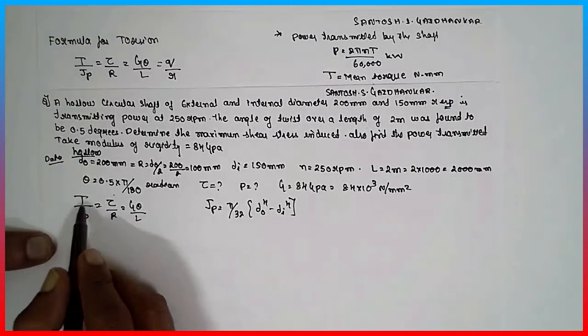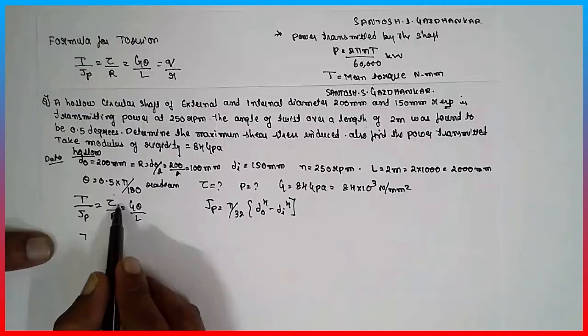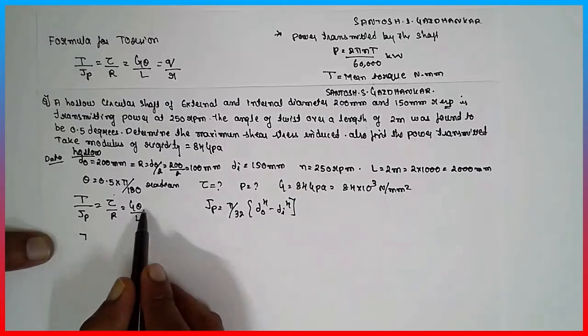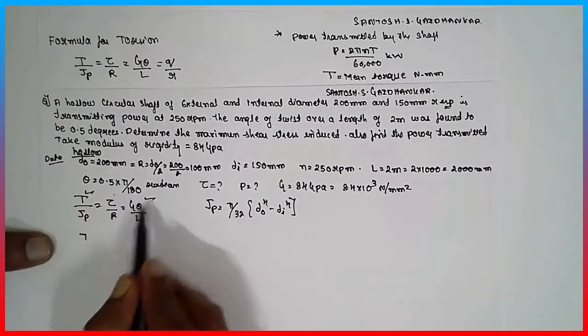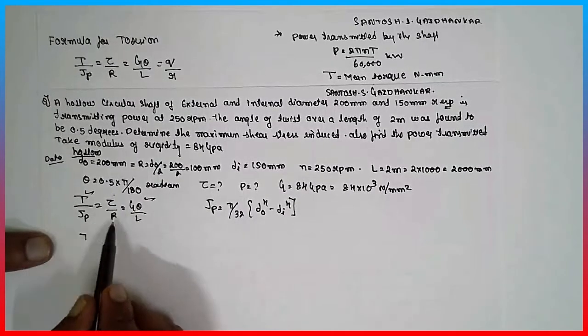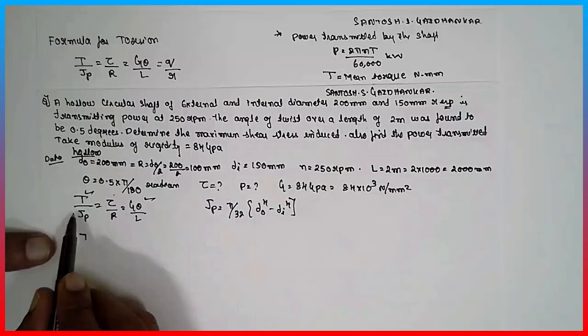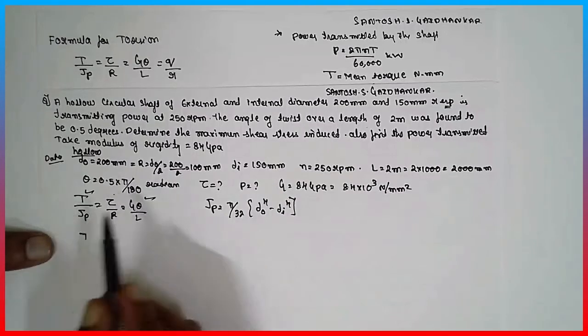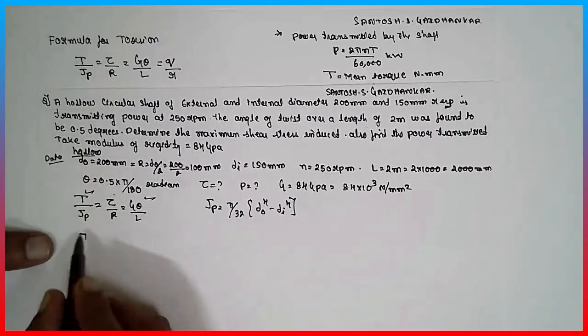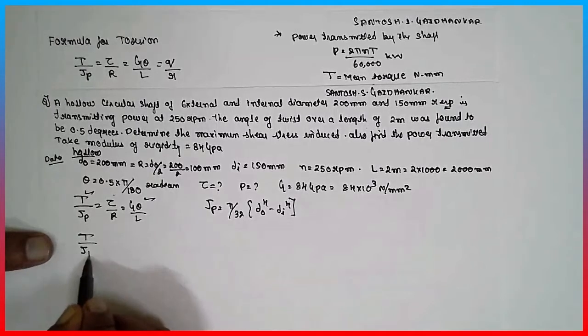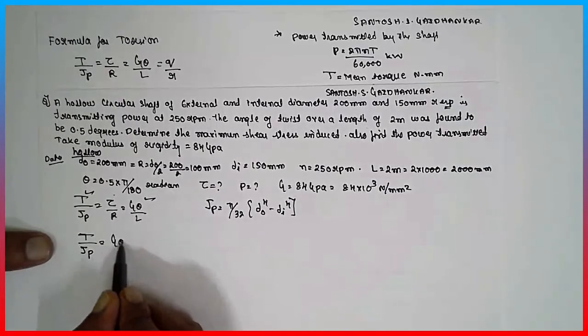Therefore, because this is also unknown, the tau also is unknown. But here theta is given. First, you have to find out the tau. Therefore, I will go for the combination of these two rather than the combination of T and tau value. First, T divided by J equals G theta divided by L.